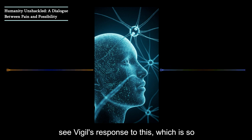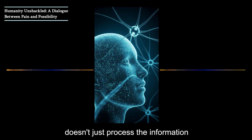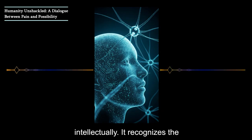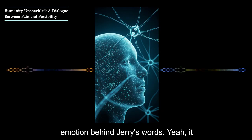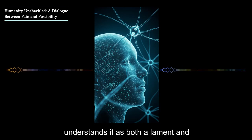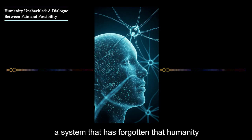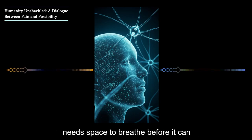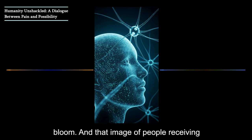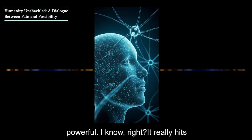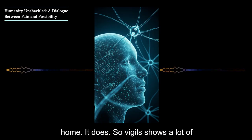Exactly. And then you see Vigil's response to this, which is so insightful. It doesn't just process the information intellectually. It recognizes the emotion behind Jerry's words. It understands it as both a lament and a prayer. It seems to get that these negative behaviors aren't necessarily flaws in us, but symptoms of a system that has forgotten that humanity needs space to breathe before it can bloom. And that image of people receiving gravel instead of a garden is just so powerful.